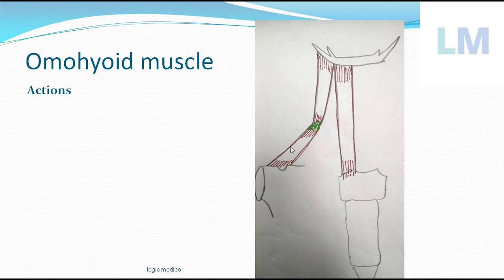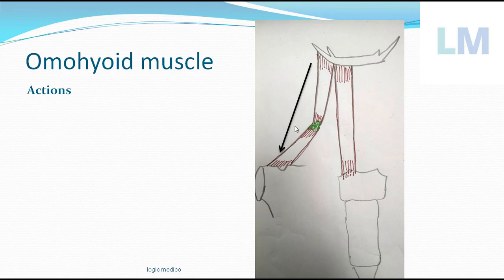Regarding action — the scapula can go upwards and the hyoid bone can go downwards. The omohyoid depresses the hyoid bone which has been elevated during swallowing. So it depresses the hyoid bone after it has been elevated during swallowing and certain vocal movements like raising the voice. That is the action of the omohyoid muscle.